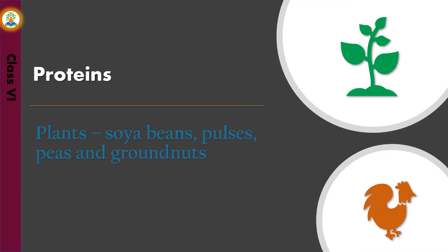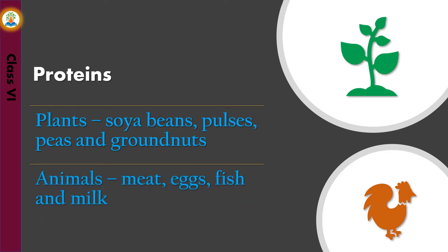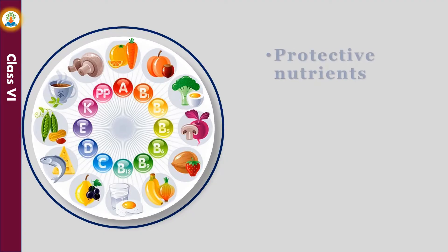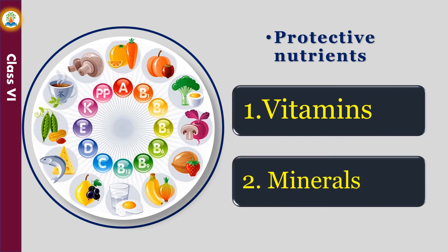Some examples of protein obtained from plants are soybeans, pulses, peas, and groundnuts. Meat, eggs, fish, and milk are some examples of protein-rich food obtained from animals. Protective food items are rich in vitamins and minerals.